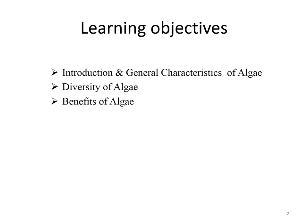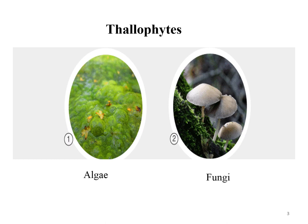Plants that do not have a well-differentiated body fall in the group Thalophyta, classified into two main subdivisions: algae and fungi. These are the most primitive types of plants, characterized by possession of a thallus — a Greek word meaning a plant body without root, stem, and leaves; 'phyton' means plant. Algae differ from fungi in possessing chlorophyll.